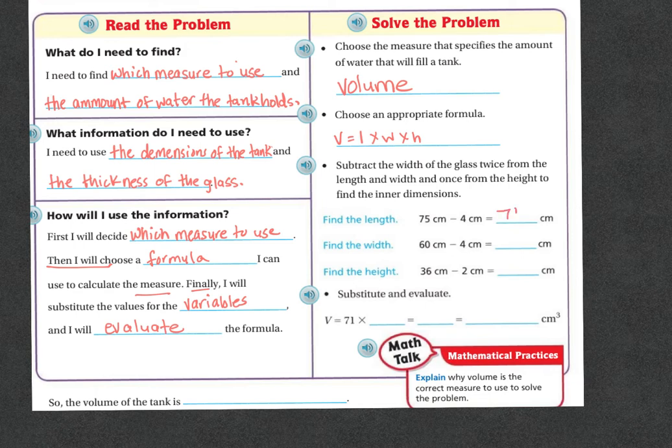So I'm going to get 71 centimeters. To find the width, it's going to be the 60 minus the four centimeters of the thickness of the glass and I'm going to get 56 centimeters. To find the height, I'm going to take the 36 centimeters and then I'm going to subtract the two centimeters for the thickness of the glass because it's only the height that's just one area and that's going to be 34.